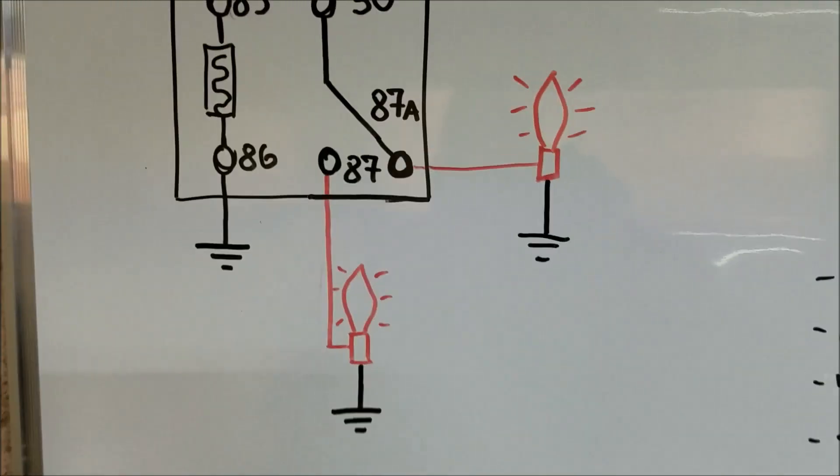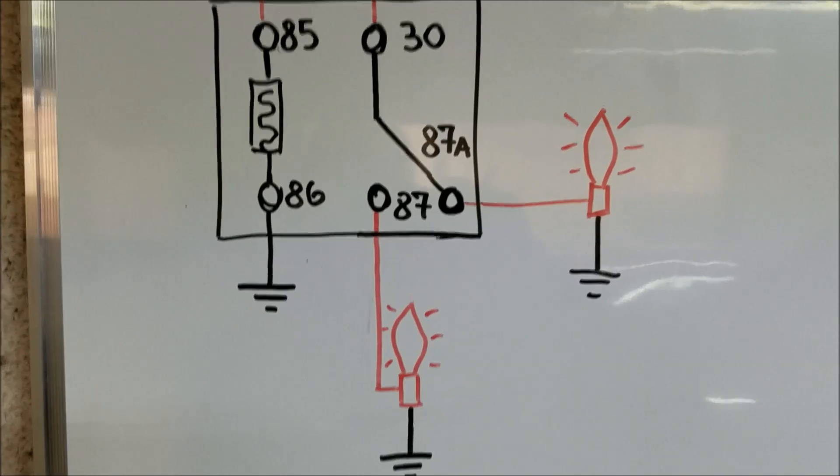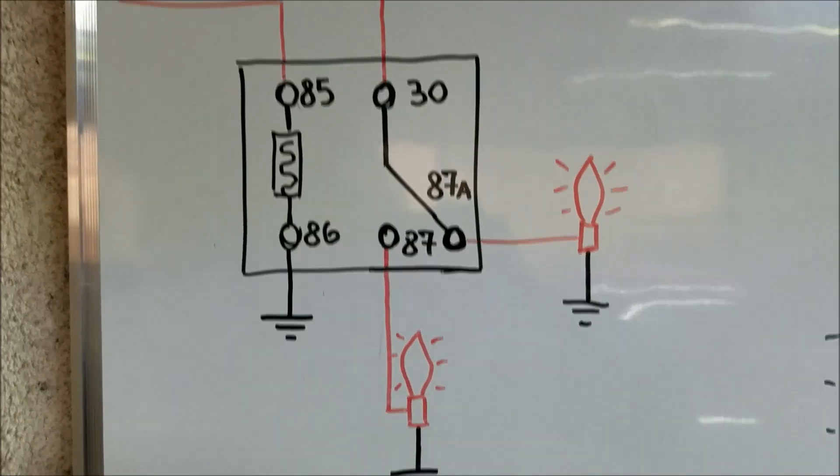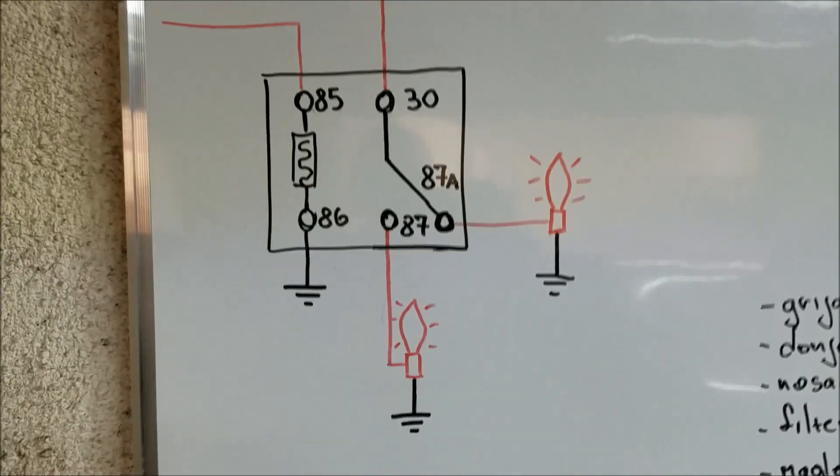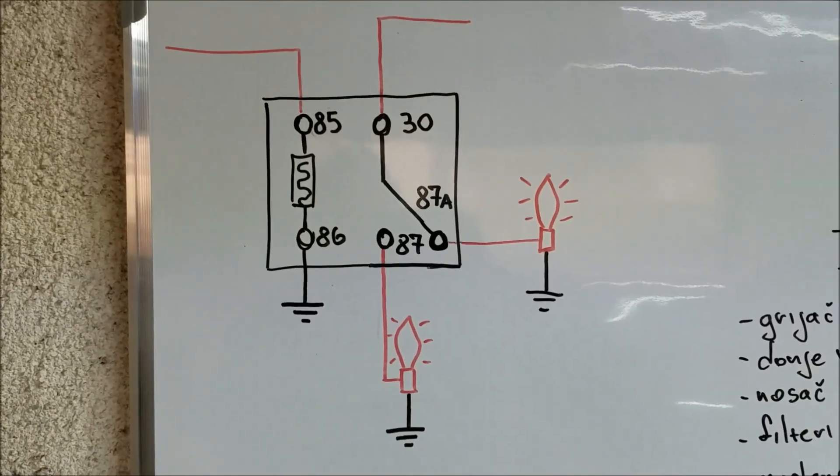Okay, and this right here is how your basic circuit might look like with the five pin relay. Now we're going to get a relay and we're going to test it.